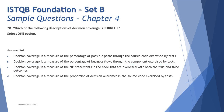Question number 28 asks which description of decision coverage is correct. Option A: decision coverage is a measure of the percentage of possible paths through the source code exercised by the test. That's the answer to path coverage, which is covered at the advanced level and is not in our syllabus. Option B: decision coverage is a measure of the percentage of business flows through the component exercised by the test. No — that's a different subject altogether.